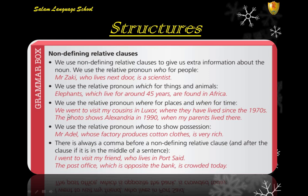We use 'where' for places and 'when' for time. For example: 'We went to visit my cousin in Luxor, where they have lived since the 1970s.' And: 'The photo shows Alexander in 1990, when my parents lived there.' We also use 'whose' to show possession. For example: 'Mr. Idol, whose factory produces cotton clothes, is very rich.'